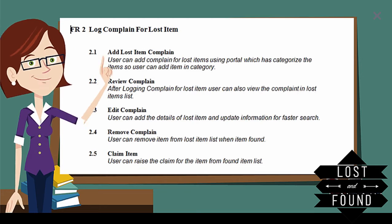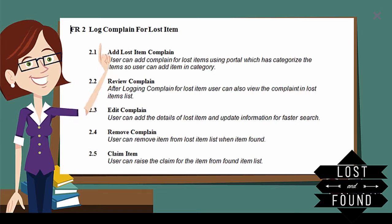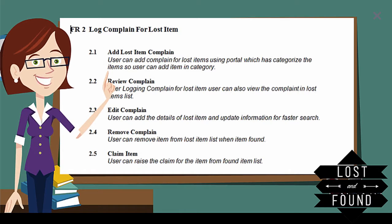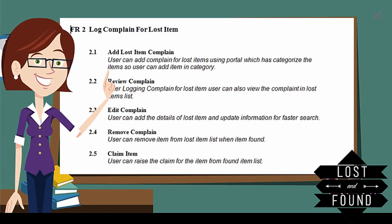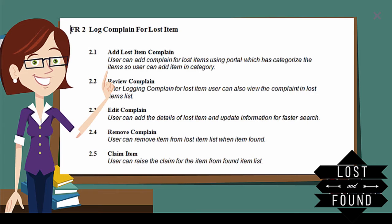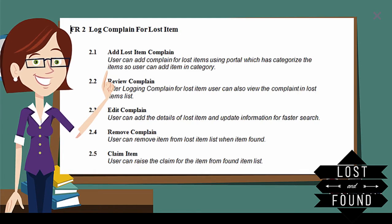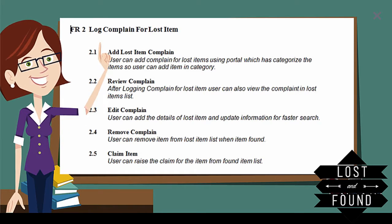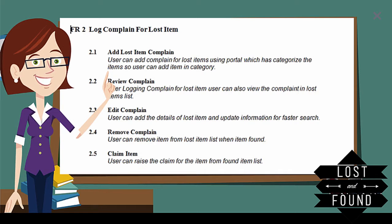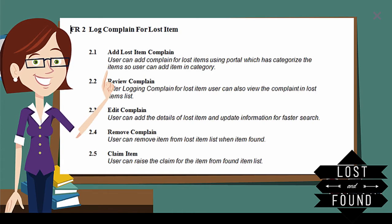Sub-requirement 2.3 is edit complaint — for example, if you want to add the color of an item, the option is always available to edit your complaint anytime. Sub-requirement 2.4 is remove complaint — whenever you get your item back, you can easily delete the complaint. Sub-requirement 2.5 is claim item — you check the list of found items, and once you find that an item might belong to you, you go ahead and claim that item.